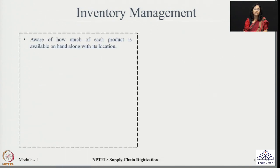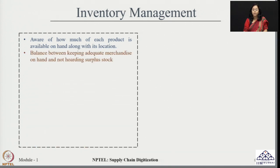When we talk about inventory, it is about how much of the product is available on hand and along with that, its location. Knowing the location and quantity of the product helps in taking many decisions for managing your supply chain. In inventory management, it is important to keep a balance between adequate merchandise on hand and avoiding holding surplus stocks.